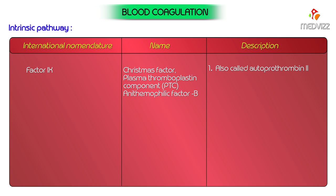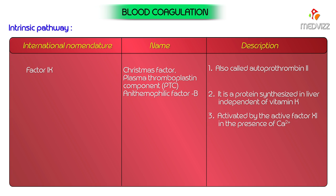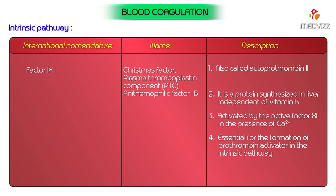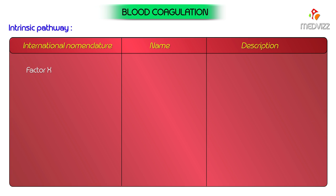Factor 9 is a protein synthesized in the liver independent of vitamin K. It is activated by active factor 11 in the presence of calcium, and is essential for the formation of prothrombin activator in the intrinsic pathway. Its absence or deficiency causes hemophilia B, which is an inherited disease similar to hemophilia A.